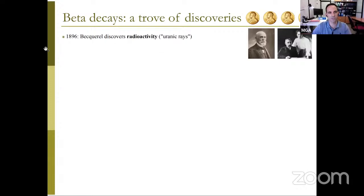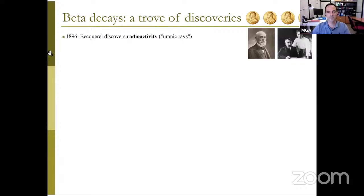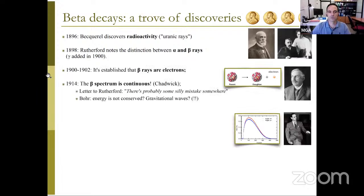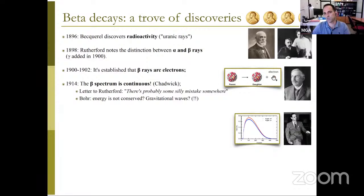Beta decays are really a trove of discoveries — many historical discoveries were made looking at beta decays, and many Nobel prizes were awarded. Everything started in 1896 when Henri Becquerel discovered radioactivity, or uranic rays as he called them. A couple of years later Rutherford noted the distinction between alpha and beta rays, and gamma were added later. It was then established that beta rays were electrons, as the electron had just been discovered a few years before.